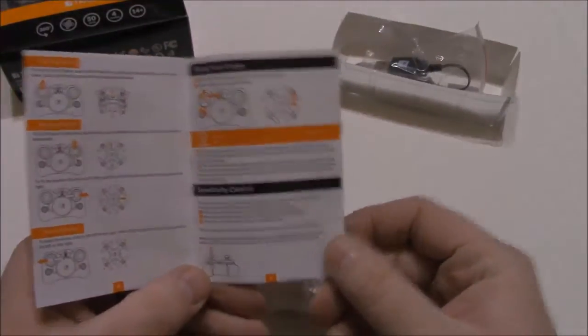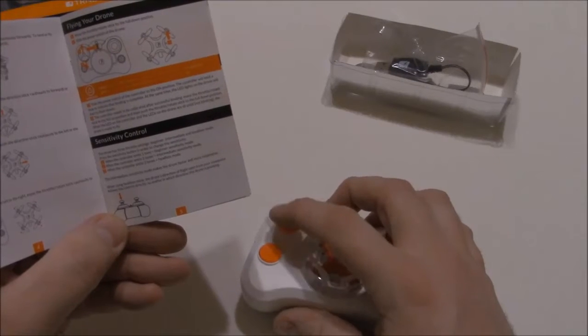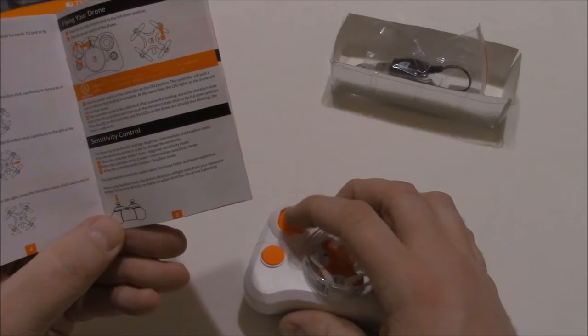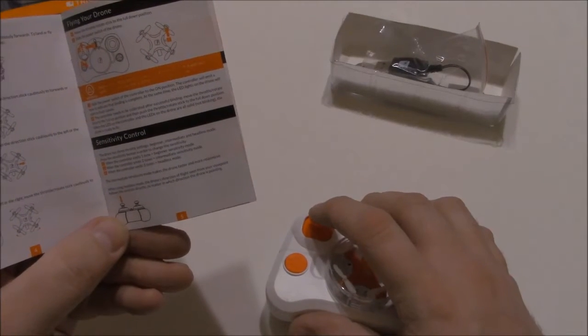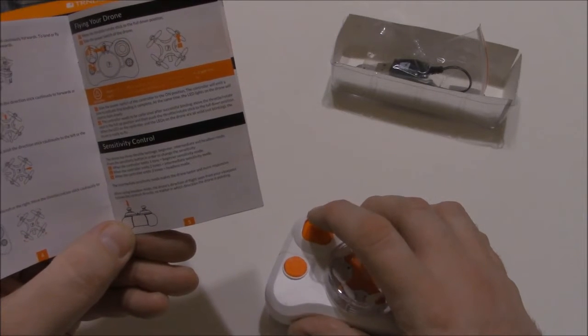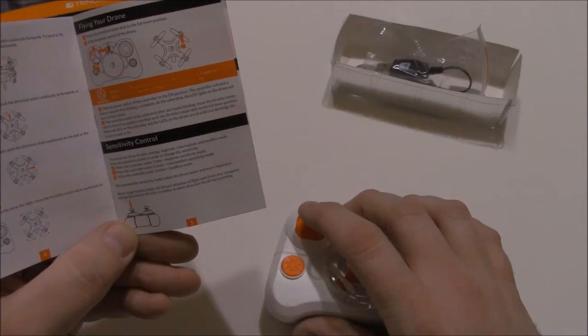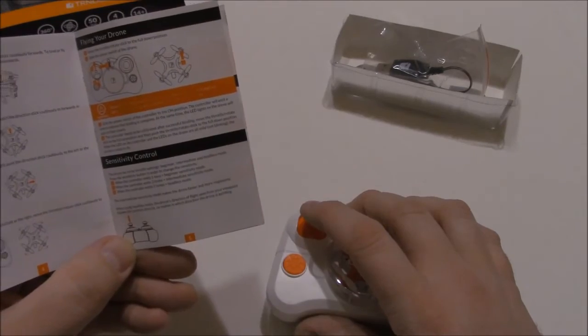Sensitivity control. The throttle is your sensitivity control. If you push it in you will hear it click. That is going to be your sensitivity. It will have one, two or three tones for beginner, intermediate or headless mode.